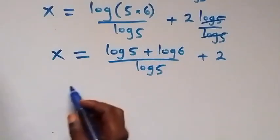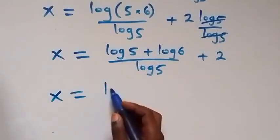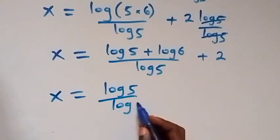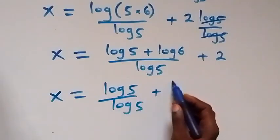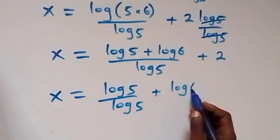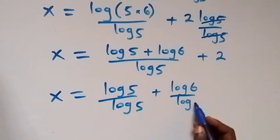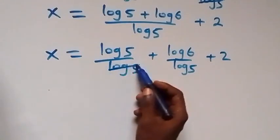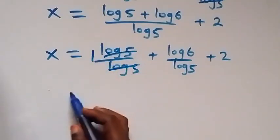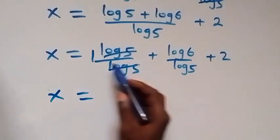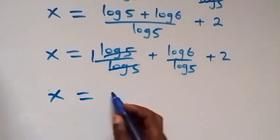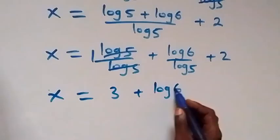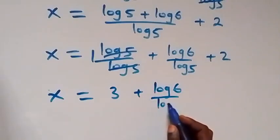We can separate this fraction into two, and we have x equals log 5 over log 5 plus log 6 over log 5, then plus 2. Also, log 5 cancels log 5 here, giving us 1. So here we have x equals 1 plus 2, which is 3. This becomes x equals 3 plus log 6 over log 5.